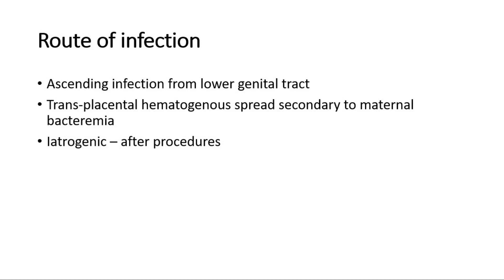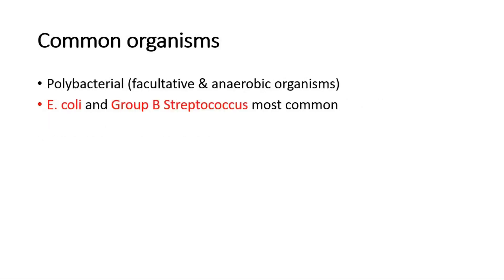The common organisms for chorioamnionitis are polymicrobial, consisting of facultative and anaerobic organisms. The most common organisms that cause chorioamnionitis are Escherichia coli and Group B Streptococcus.